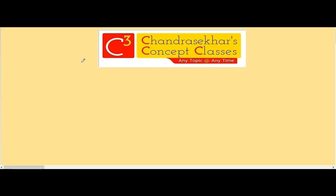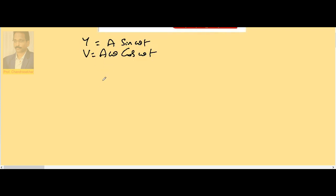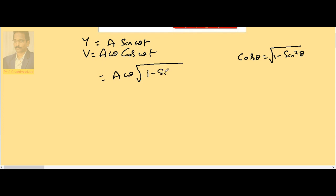In SHM, velocity v is given by aω cos(ωt) because displacement is equal to a sin(ωt). Now if I convert aω cos(ωt) into sine terms, we know that cos θ = √(1 - sin²θ). Substituting, this becomes aω into √(1 - sin²(ωt)), and since sin(ωt) = y/a, we get √(1 - y²/a²).